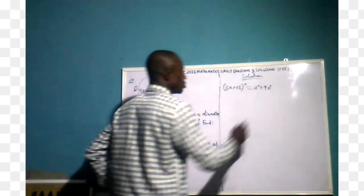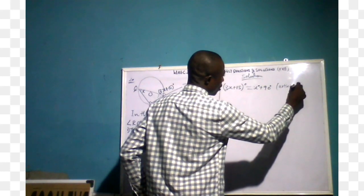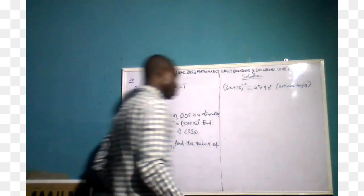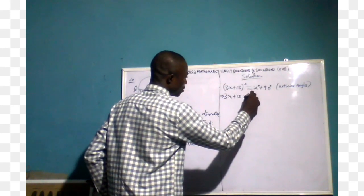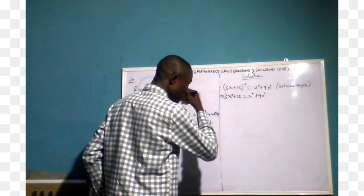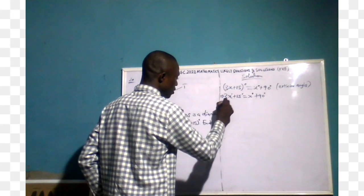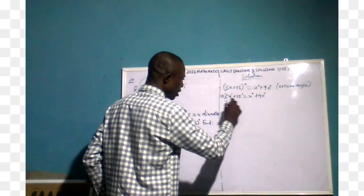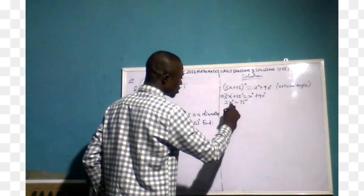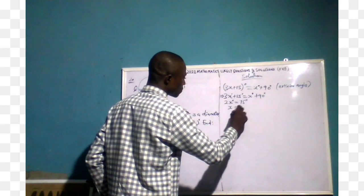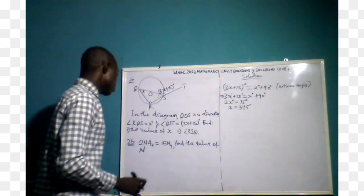Writing the reason: exterior angle theorem. We have 3x plus 15 equals x plus 90. Collecting like terms: 3x minus x equals 90 minus 15, giving 2x equals 75, so x equals 37.5 degrees. That answers question 2a part one.